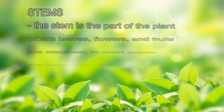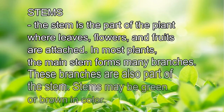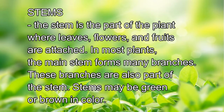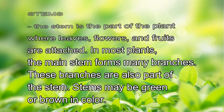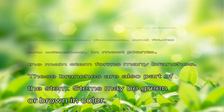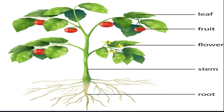Stems: the stem is the part of the plant where leaves, flowers, and fruits are attached. In most plants, the main stem forms many branches, which are also part of the stem. Stems may be green or brown in color. The stem connects the roots to the other parts of the plant. It grows upward toward the sunlight and carries water from the roots up to the leaves.